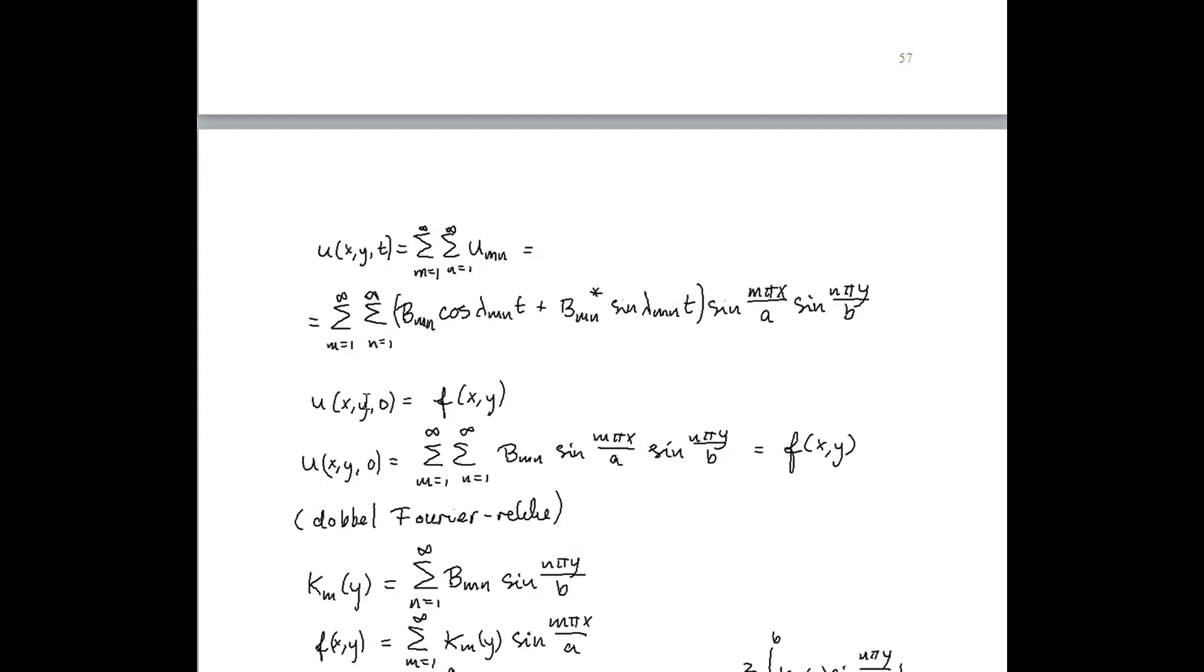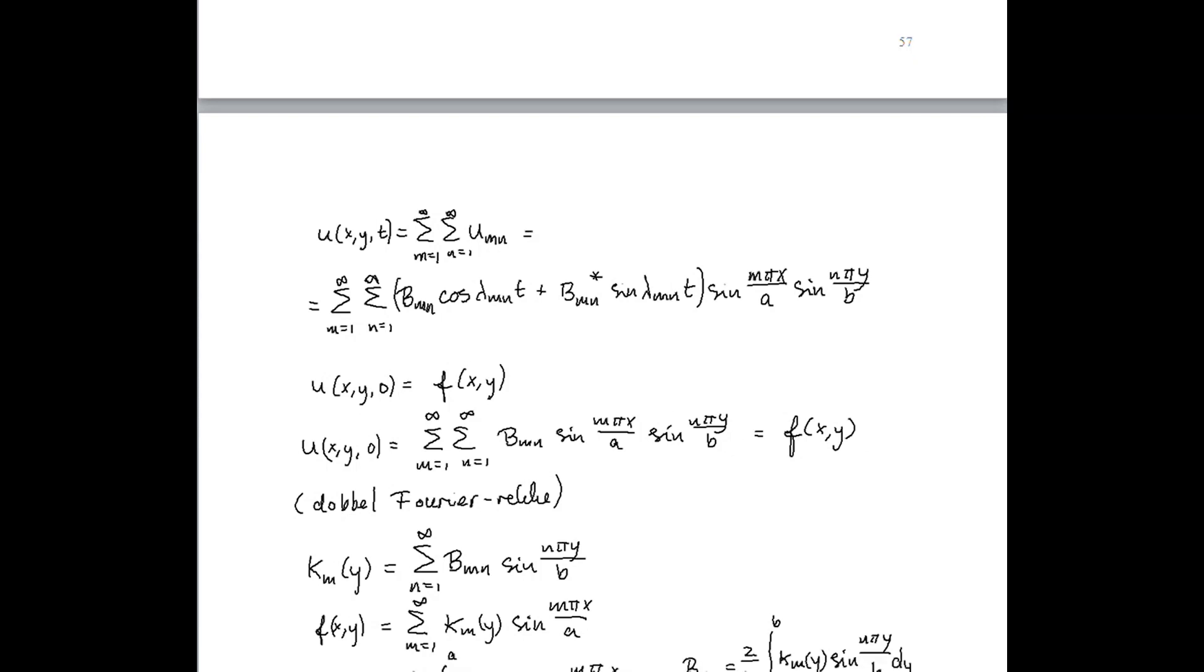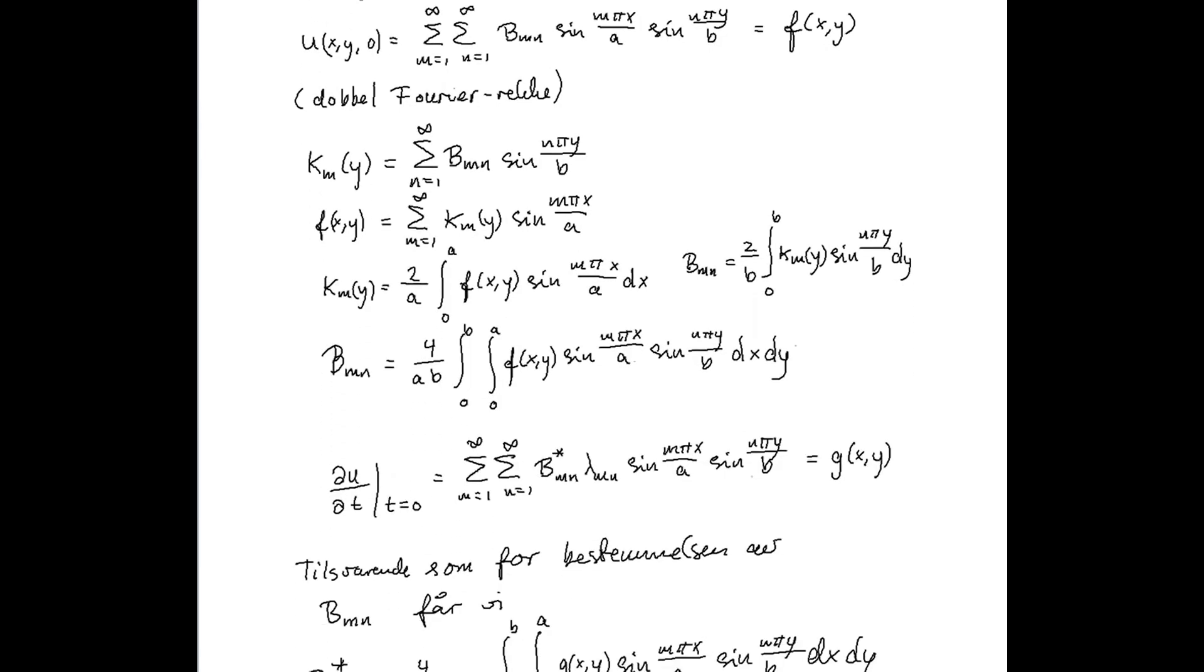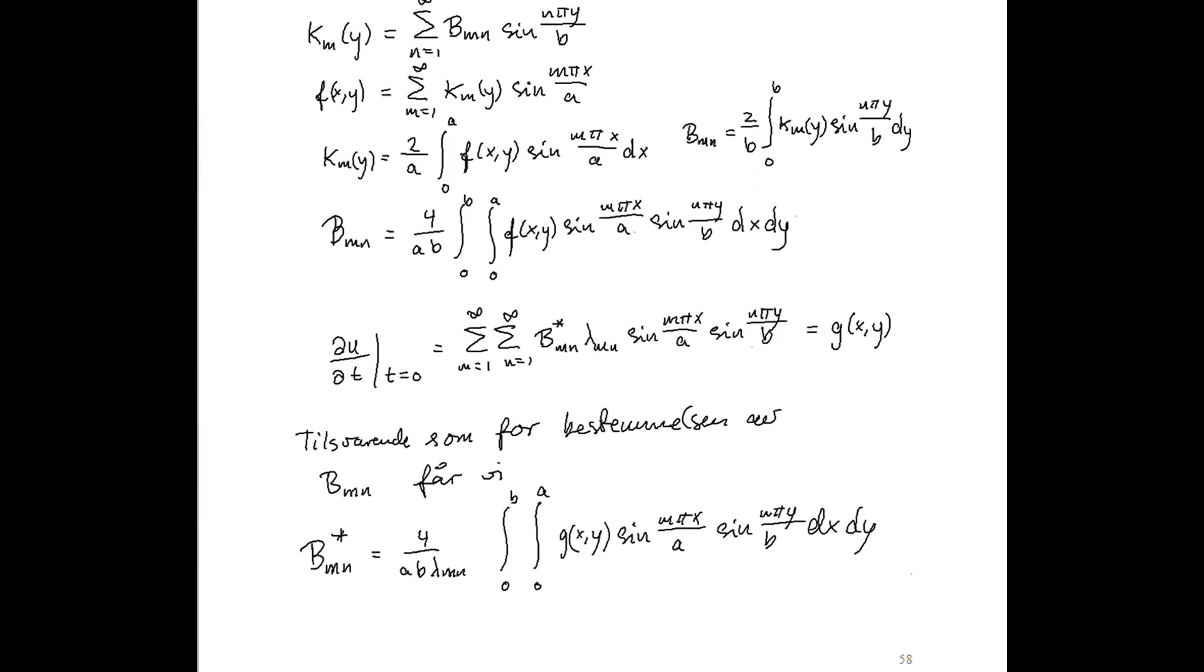So, by inserting values, the value f of x, y, which was the initial displacement, we are able to find the explicit formula for these coefficients, b(m,n) and b(m,n) star, in the following way.